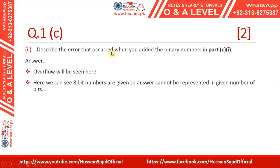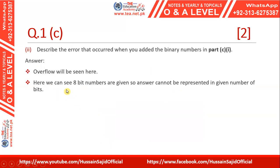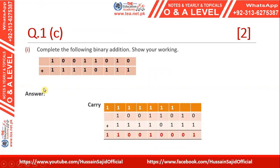Part c also asks to describe the error that occurred when adding the binary numbers. The error is overflow. Overflow occurs here because 8-bit numbers were given but the answer is a 9-bit number. The answer cannot be represented in the given number of bits — since we assume the answer is also an 8-bit number, a 9-bit result causes an overflow error.